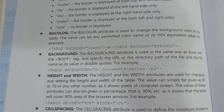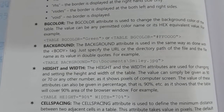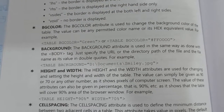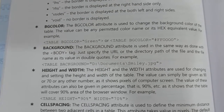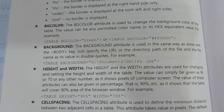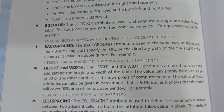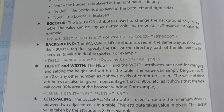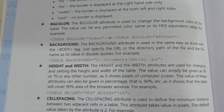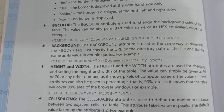The next attribute is Background. This attribute is used in the same way as with the body tag, but you specify the URL or the directory path and the file name as its value in double quotes. If you want to set an image as the table background, you write: table background equal to the full path of the image inside double inverted commas.